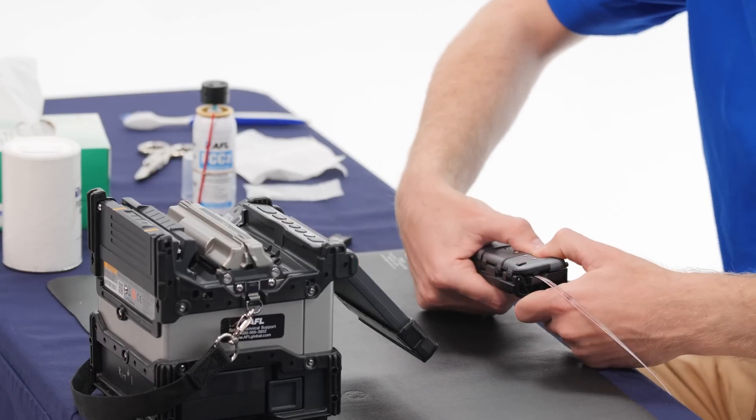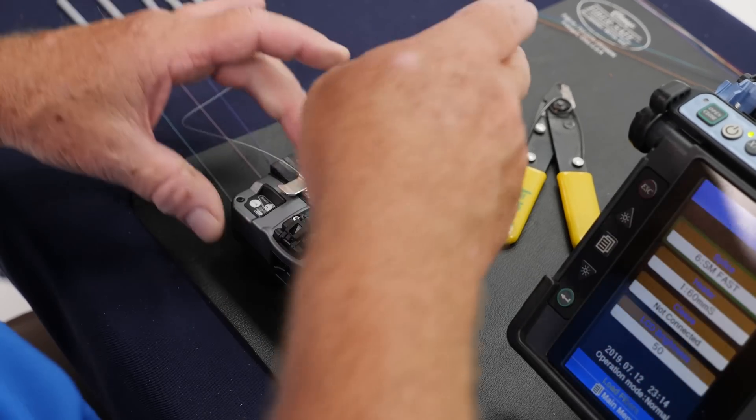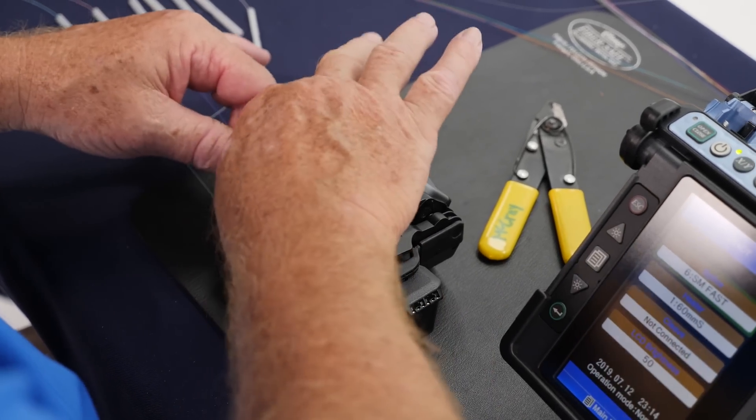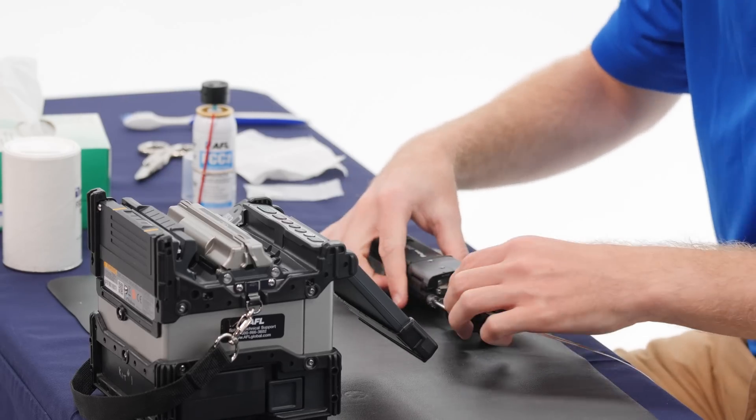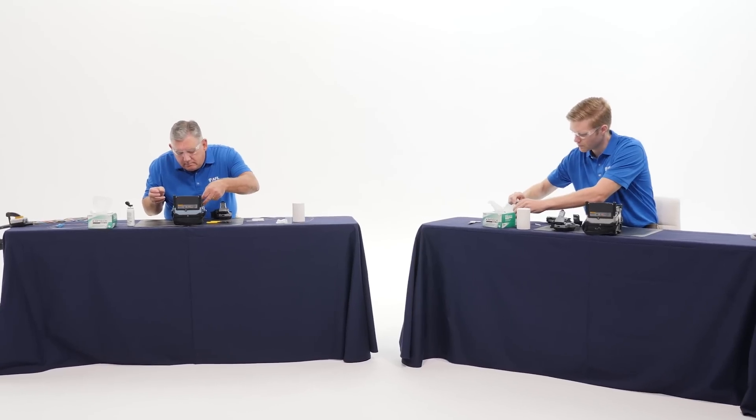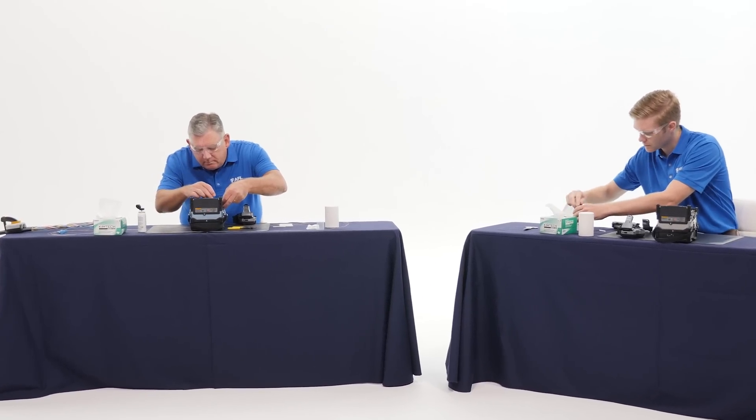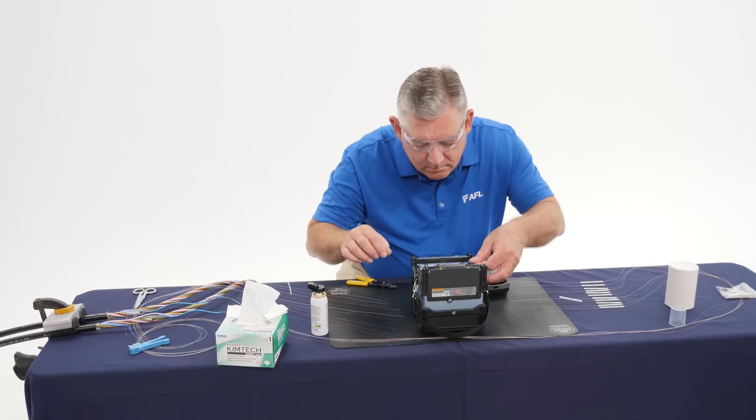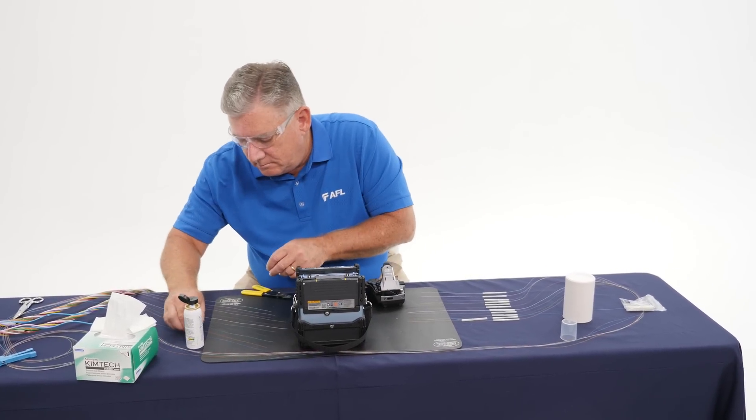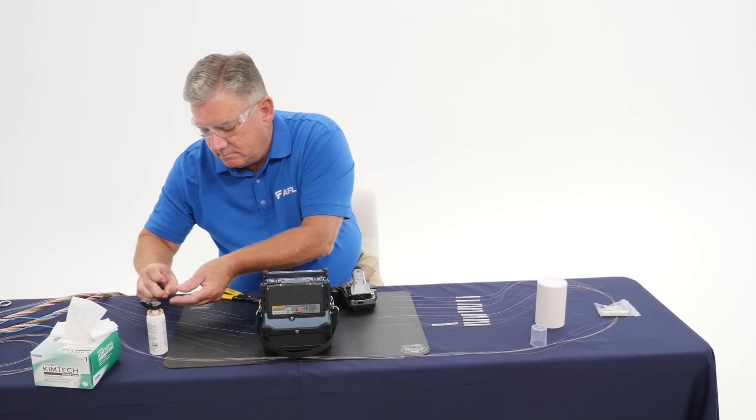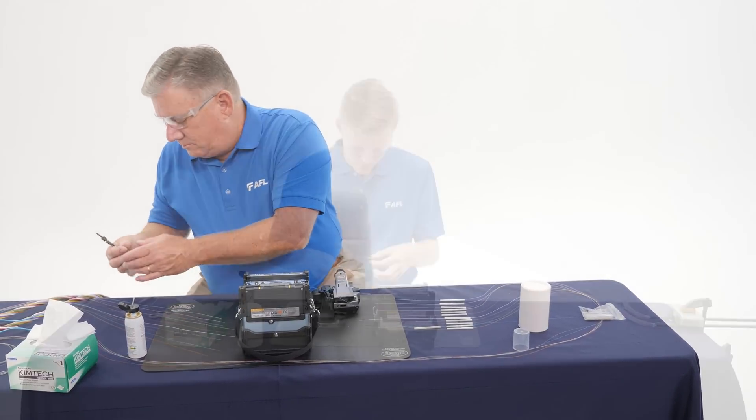Pat Dobbins will be using similar equipment. He's already got his first fiber stripped and cleaved and he's loading it into his splicer. Rob is still working on removing the acrylate coating with the thermal stripper. Pat is putting his fiber into the splicer already. Pat is already significantly ahead of getting the first fiber loaded into the splice machine.